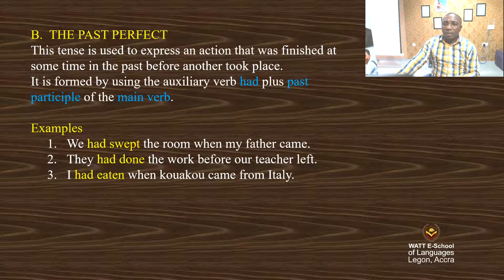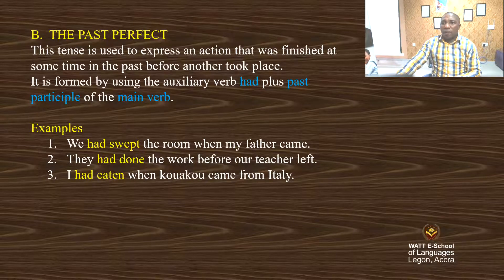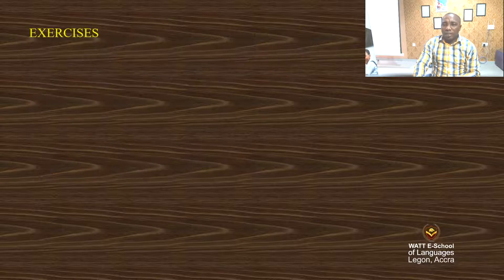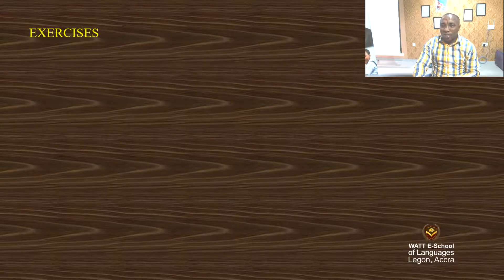These outlined verbs are the past perfects. We see the auxiliary verb 'had' has been added to the past participle of the verb. Now let's practice by doing some activities, as I usually do.